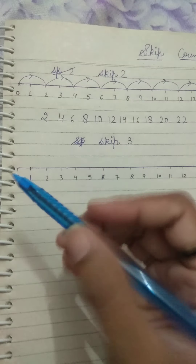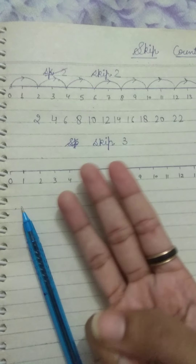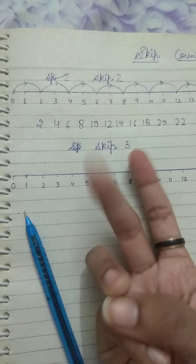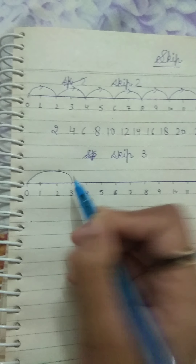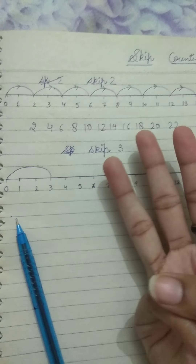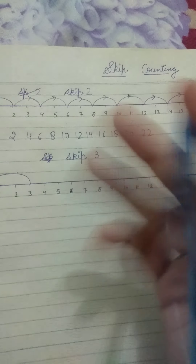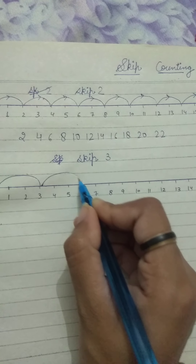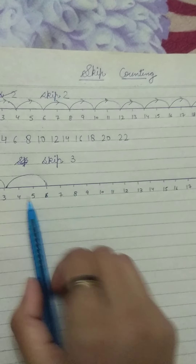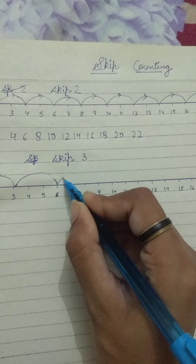We will start with 0. We will open 3 fingers — like 1, 2, 3. We will start with 3. Again, 3 — then we count 4, 5, 6. We land on 6. Again, 3 more fingers — 7, 8, 9. We land on 9.